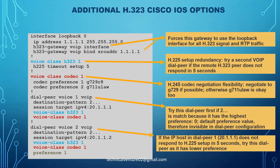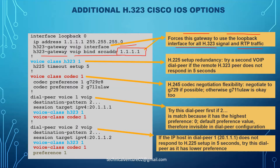Looking at how these configurations connect, the command 'h323-gateway voip bind srcaddr' or 'h323-gateway voip bind source-address' is the key command discussed earlier. Don't confuse the IP addresses in different examples. This command forces the gateway to use the loopback interface for all H323 signaling and RTP traffic, and the IP must match what's configured on CUCM.